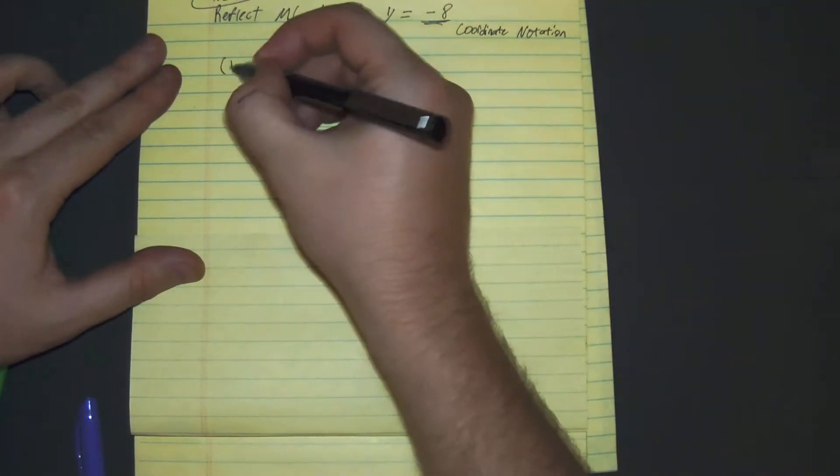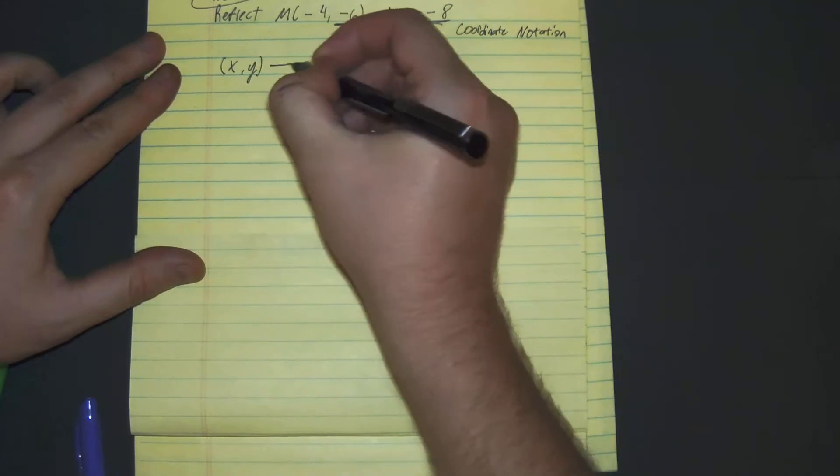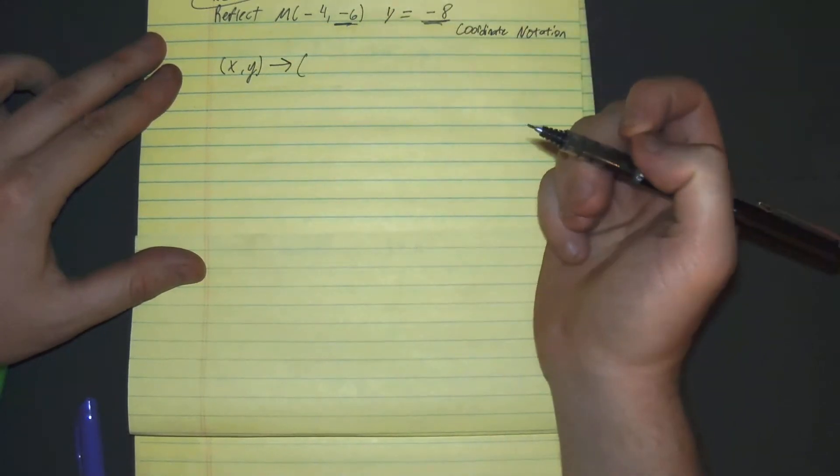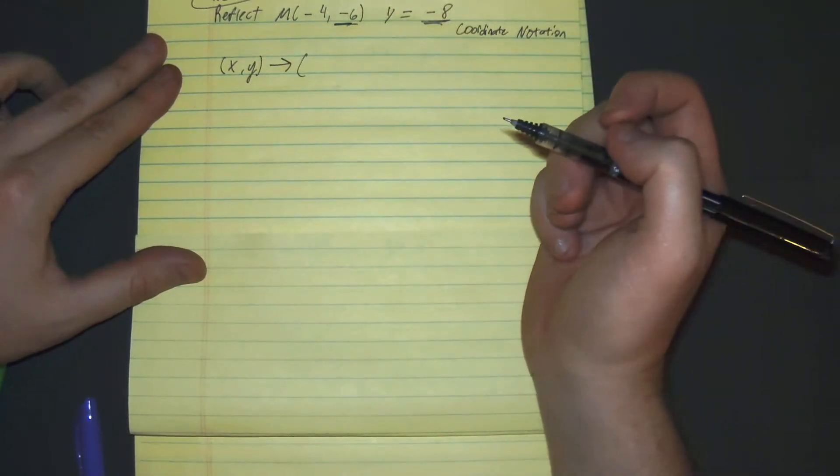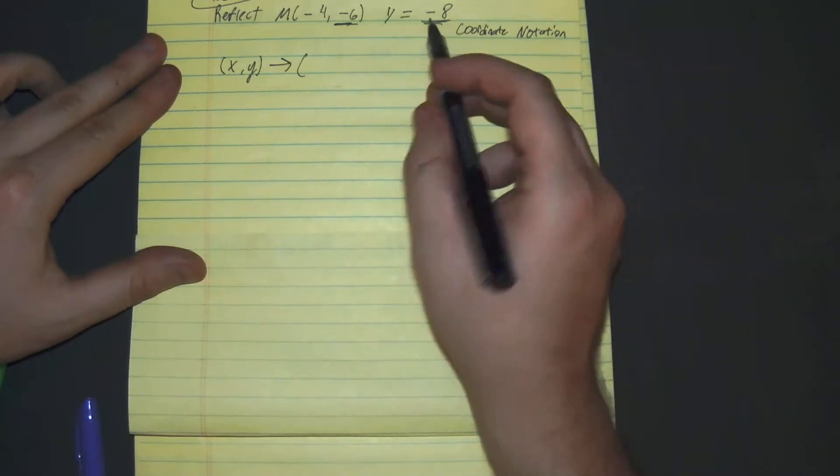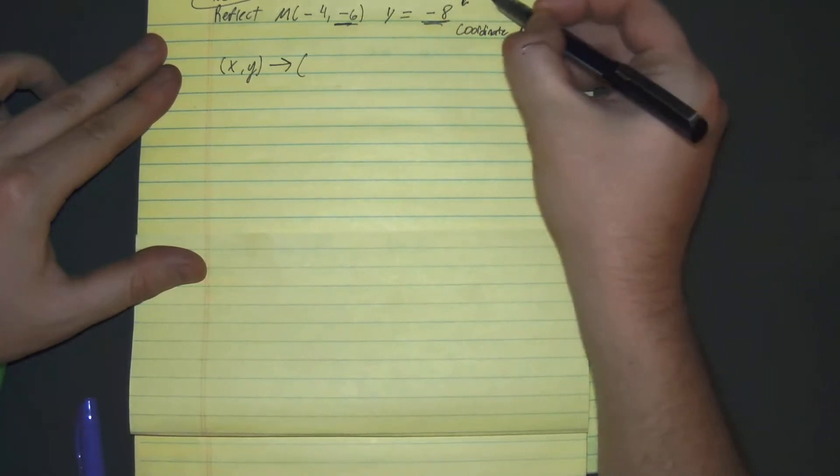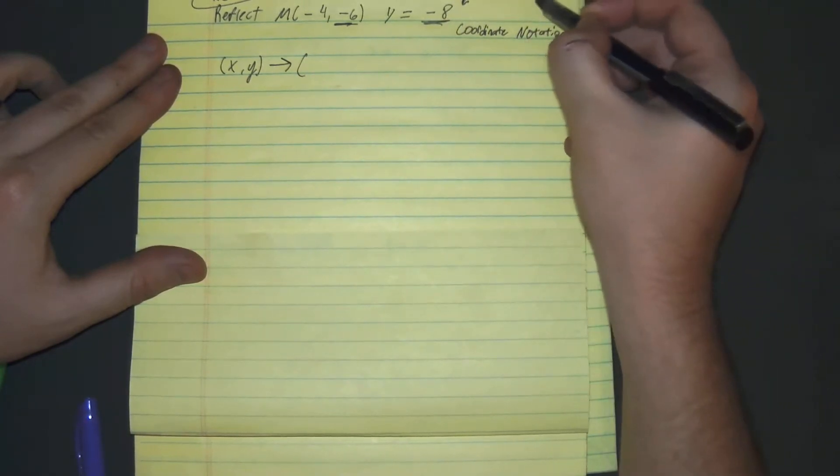Okay, so the rule would look something along the lines of this: (x, y). The x value will stay the same because we are working in a vertical distance because this slope has a zero slope. It's a horizontal line.